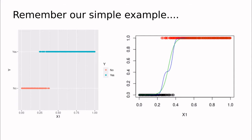So let's go back to this example. If you remember, we have just one feature x1, it could be the concentration of a drug, and then we have this categorical variable that can take a couple of values, no and yes.